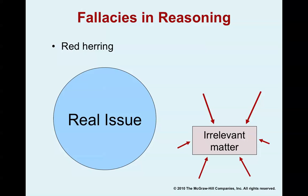A red herring argument distracts listeners from the real issue at hand by leading them toward an irrelevant matter. This trick is used a lot in political debates. For example, one may argue for laws protecting the bald eagle, and an opponent counters: 'How can we even think about birds when our most pressing problems deal with humans? Let's work on taking care of homeless people before we get all worked up about animals.' A red herring has been presented, diverting attention from the real issue.